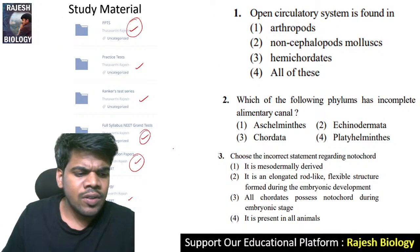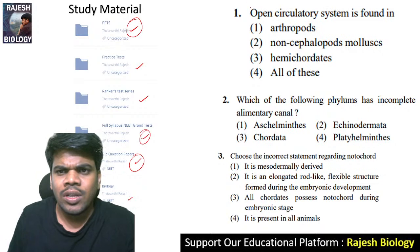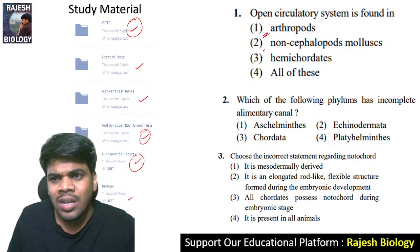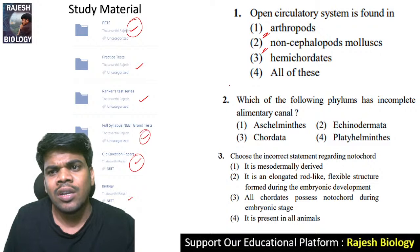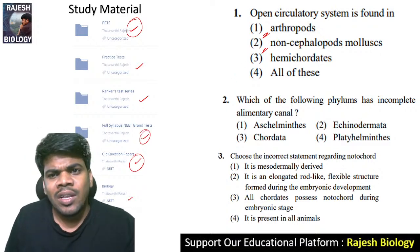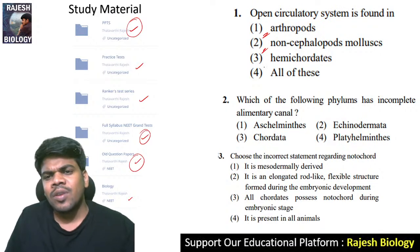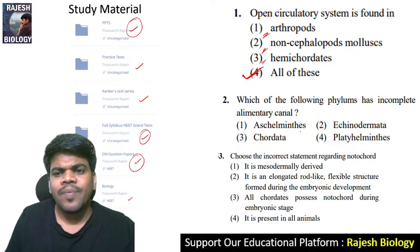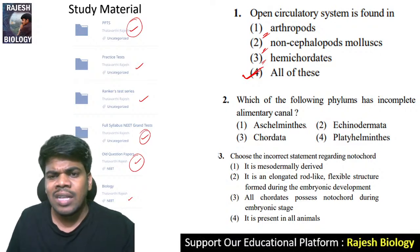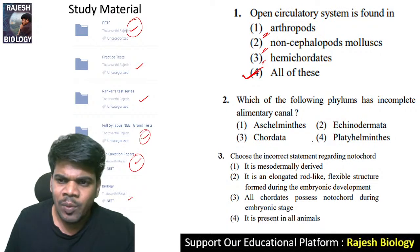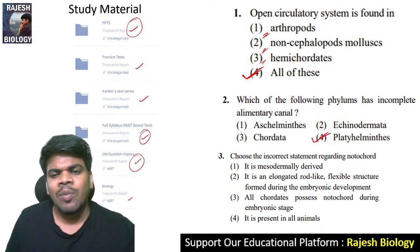The answer for questions one to three: Open circulatory system is found in arthropods, non-cephalopod mollusks — only cephalopods have a closed circulatory system — and hemichordates also have an open circulatory system. So the right answer is all of these. Which phylum has an incomplete alimentary canal? It is only present in Platyhelminthes. From Aschelminthes onward there is a complete alimentary canal.